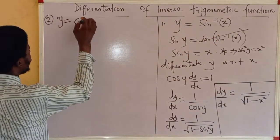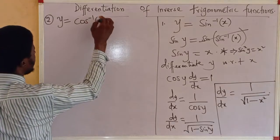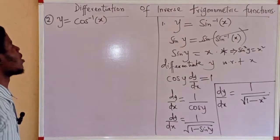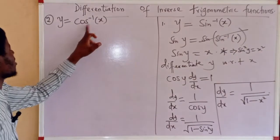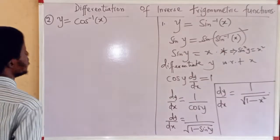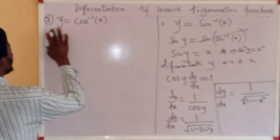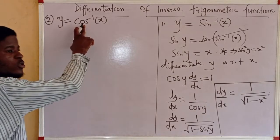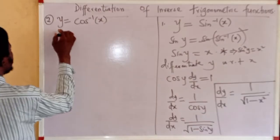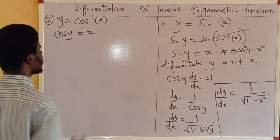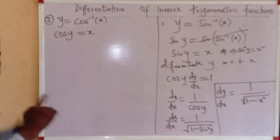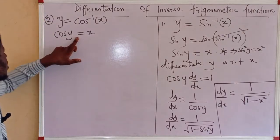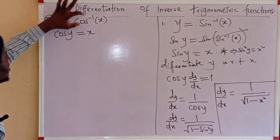Now let's consider number 2: y = cos⁻¹(x). What is dy/dx — the derivative of the cosine inverse of x with respect to x? In a similar fashion, if I take the cosine of both sides so as to eliminate the cosine inverse, I obtain cos y = x. If I take the cosine inverse of both sides, I obtain y = cos⁻¹(x).